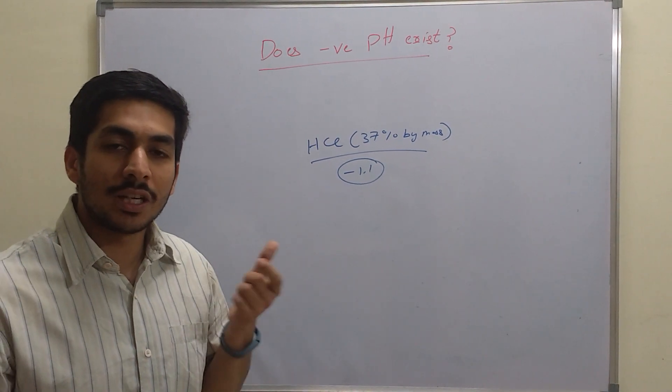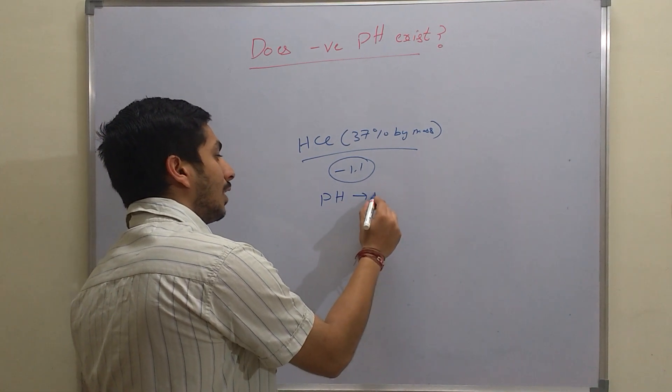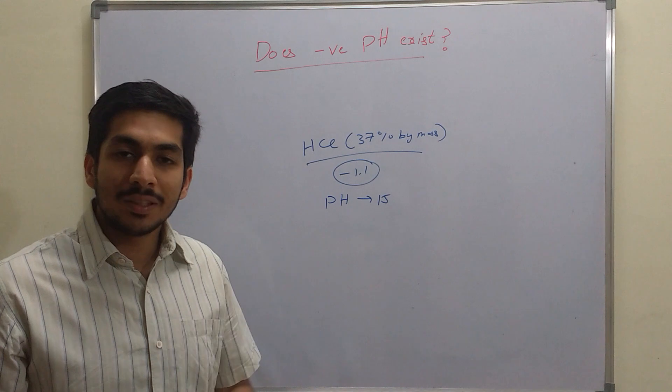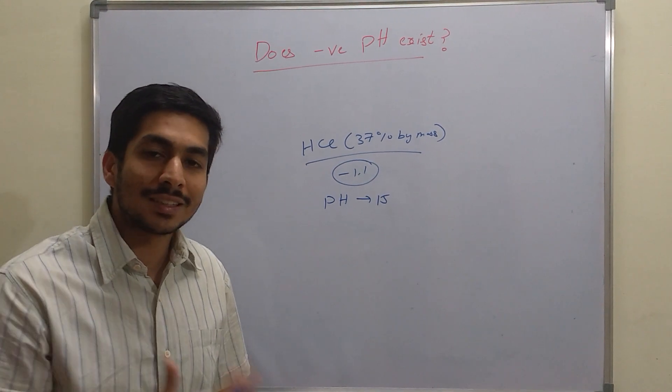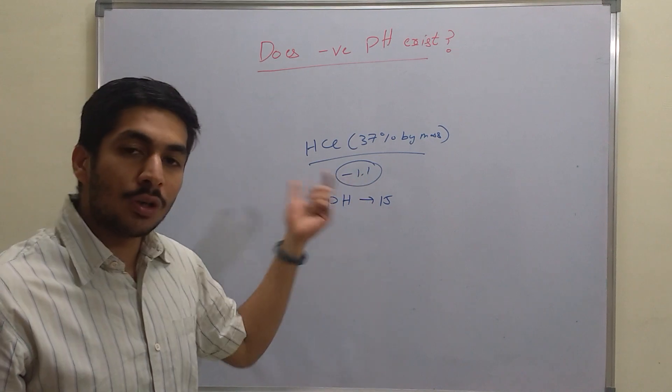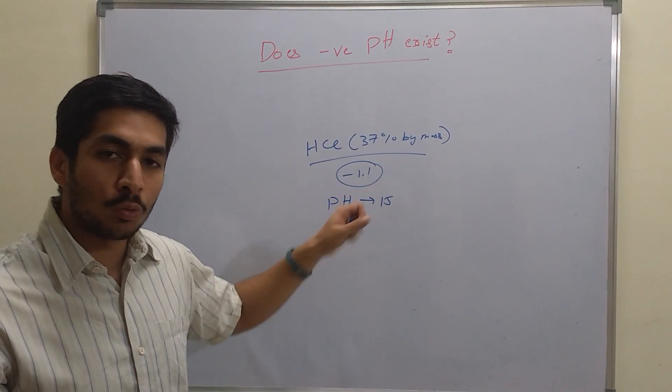Similarly, saturated solution of NaOH which is commercially available has a pH of 15. That means it's commercially synthesized and it is very common to have a pH beyond the range from 0 to 14, like 15 and minus 1.1.